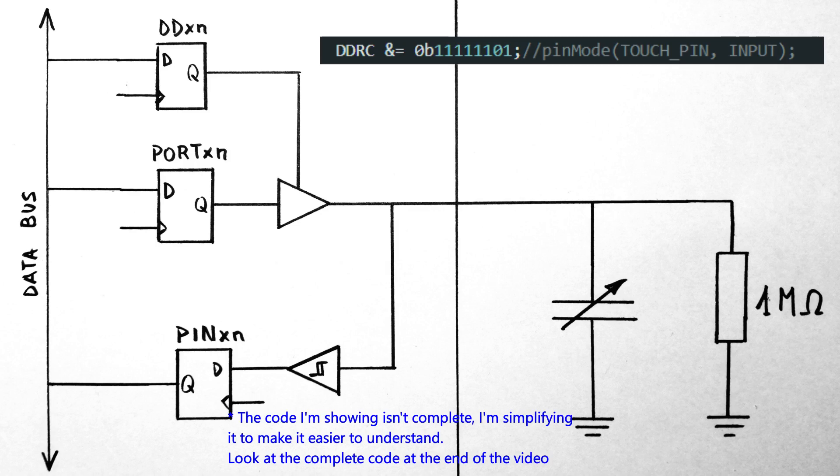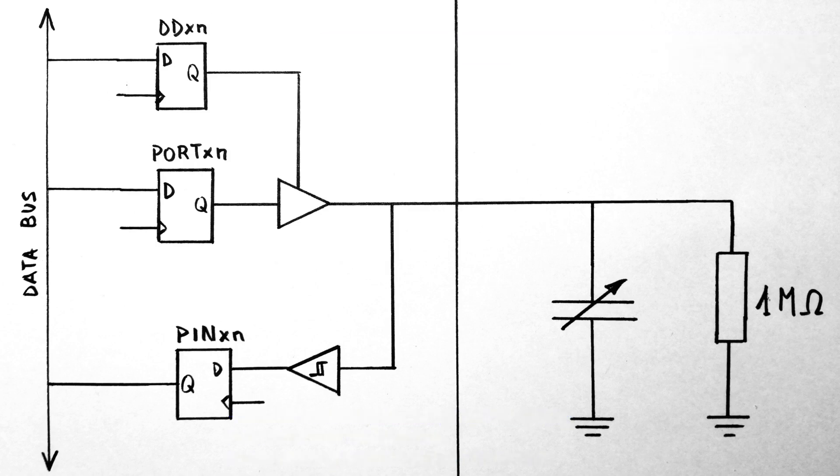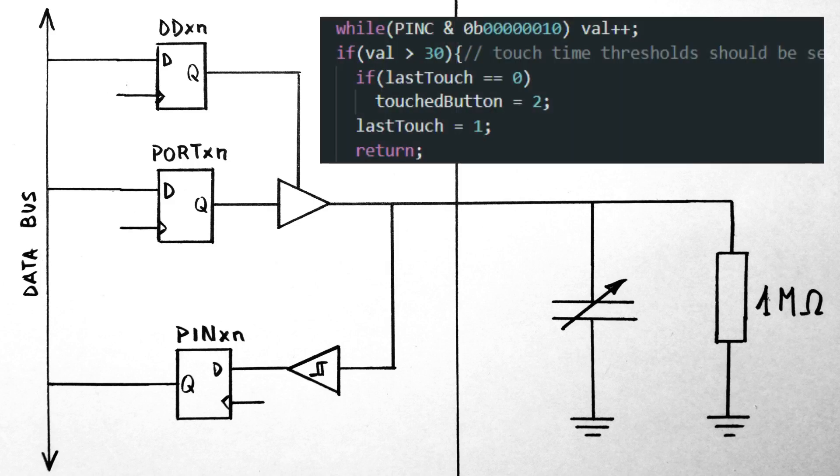At this point the capacitance will discharge through the one megaohm resistor. At the same time we will be checking repeatedly what the value in the pin X register is, and as soon as it goes to zero this means that the capacitor will be mostly discharged. The time that this takes will define roughly how large the stray capacitance is.